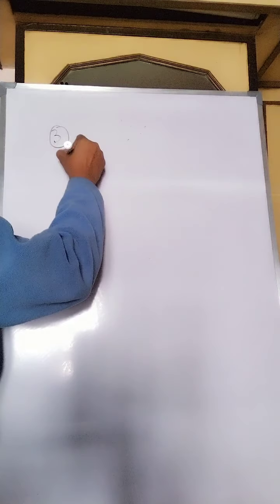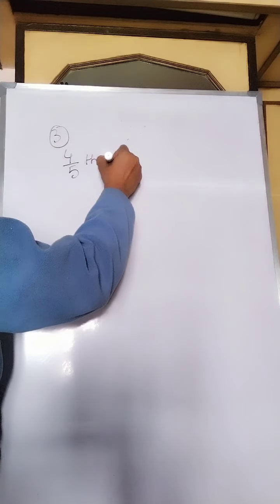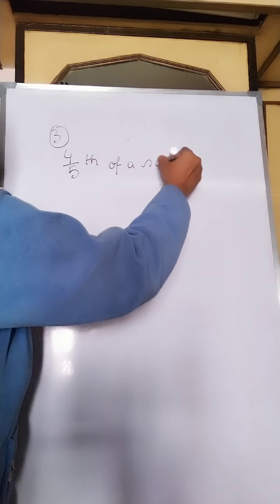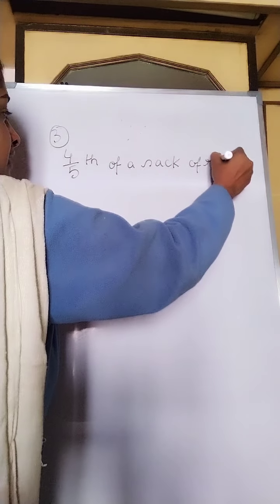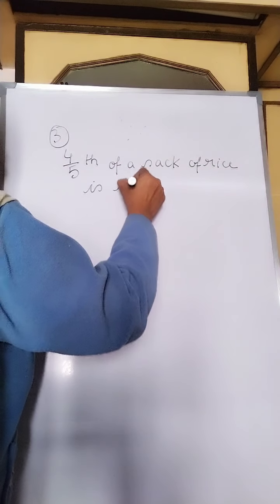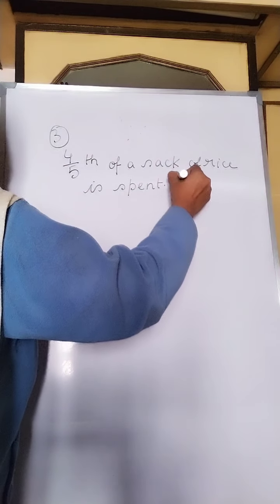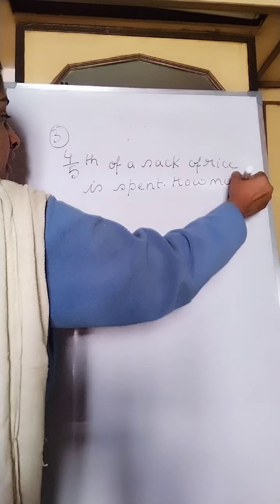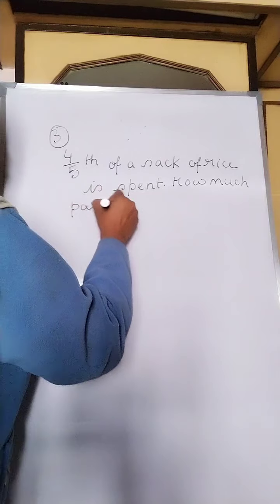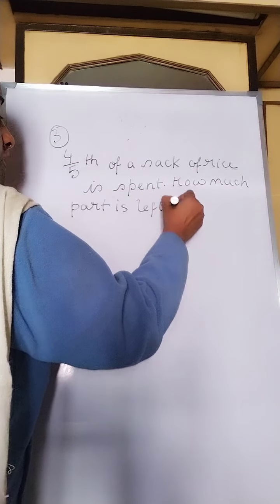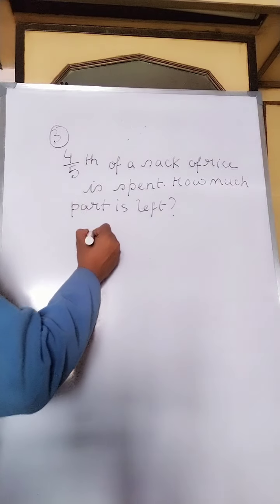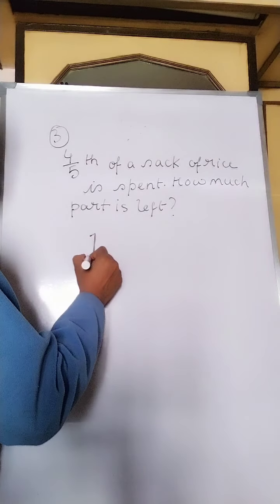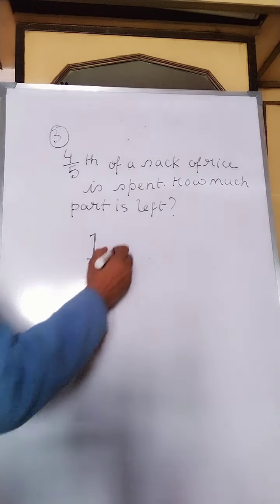Sum number 3. Given that 4/5th of a sack of rice is spent. How much part is left? So what you will do? We always consider the whole as one, the whole part as one. So 4/5th part is spent, so 1 minus 4 by 5.